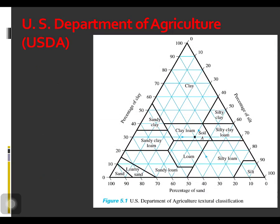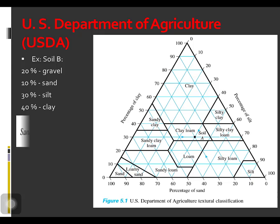This is the USDA textural classification chart. The use of this chart can be demonstrated by an example. Soil B has 20 percent gravel, 10 percent sand, 30 percent silt, and 40 percent clay based on the particle size distribution under the USDA particle sizes. The USDA textural classification is based only on the fraction of soil that passes through the No. 10 sieve, or particles less than 2 millimeters in diameter.